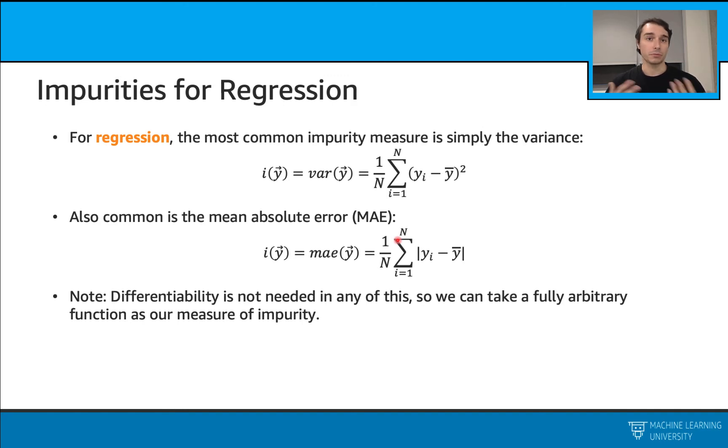Let's also talk about the impurities for regression problems. In regression problems, we will have numerical values, and the most common measure is this variance. Here, we are using the mean value, and then we calculate this variance term. Similarly, we can use a mean absolute error. In this case, we will just use this mean absolute error equation here, and we can calculate these impurities for each of the nodes in the tree.